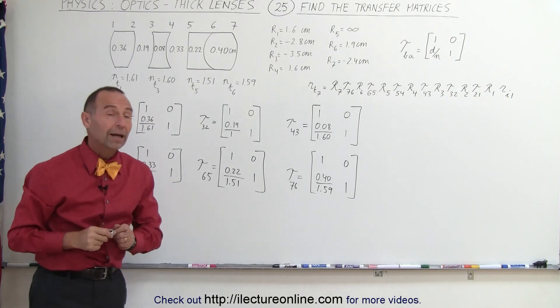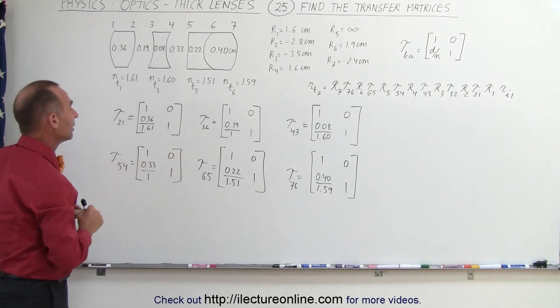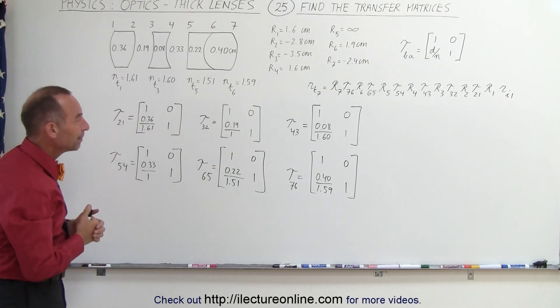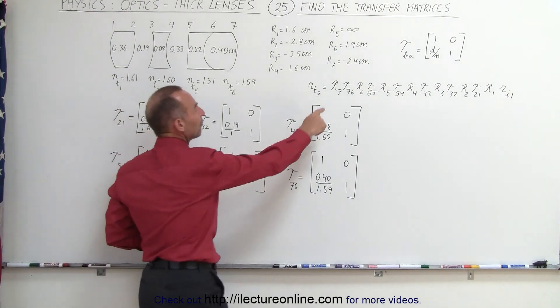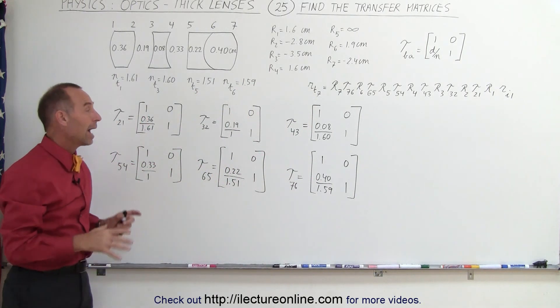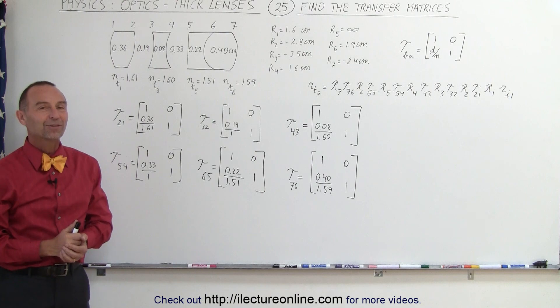So that's how you go about it. You first go ahead and find all the transfer matrices. You write those down, and you calculate what these fractions are in each case, the D divided by N. And of course, then you need the next set of matrices, which would be the refracting matrices, or 7 of those. And on the next video, we'll show you how to obtain those 7 matrices. That's how it's done.